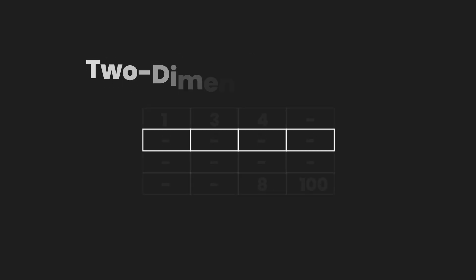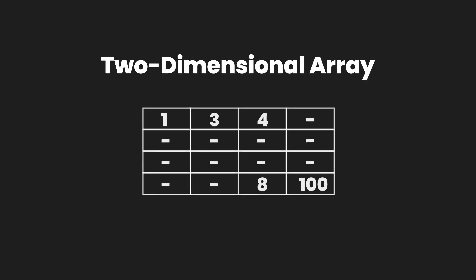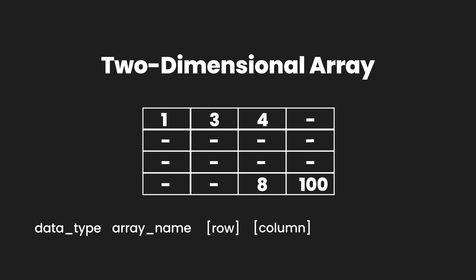So if we want a two dimensional array we would obviously use two square brackets. For an array of four by four, or four rows and four columns, we use a syntax: data type, followed by array name, followed by square brackets containing the number of rows, followed by another pair of square brackets containing the number of columns, which is then set equal to curly braces, where each entry within the curly braces is another pair of curly braces enclosing the elements in the columns.